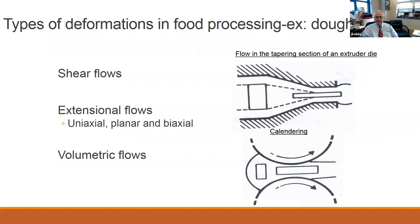Viscoelasticity is observed in many different kinds of flows. We commonly employ shear flows, but there are also very important extensional flows: uniaxial extension flows, planar extension flows, and biaxial extension flows, as well as volumetric flows. For example, in dough sheeting or calendaring, if the rotation speed of the two calenders is the same, you are essentially pulling on the material in the same direction, extending it — which could be uniaxial or planar extension.